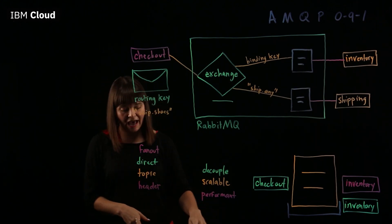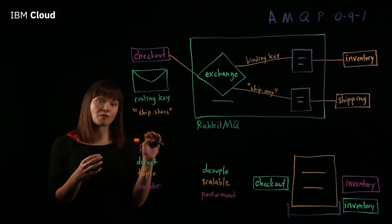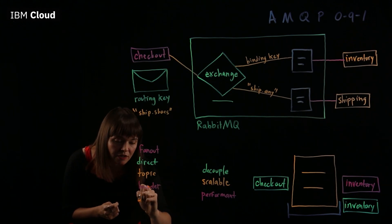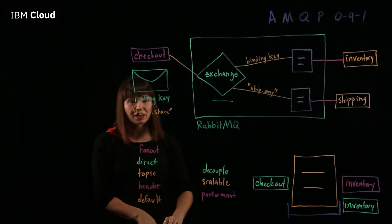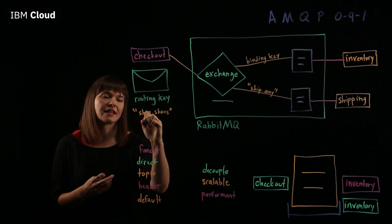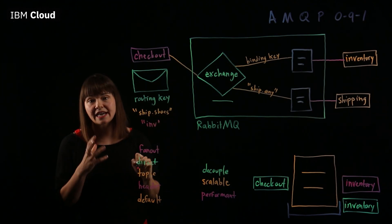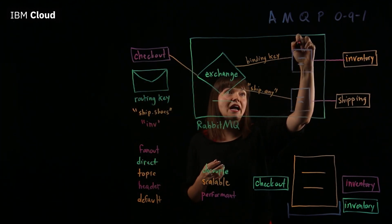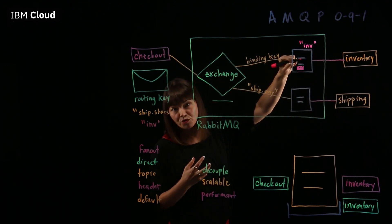And then finally, we have a default exchange. This exchange is unique only to RabbitMQ, it's not part of the AMQP message model. So the default exchange is also called a nameless exchange. And with the default exchange, the routing key, let's say the routing key of this message is inv. The routing key is getting tied to the name of the queue itself. So if this queue is named inv, then the message would route through to there.